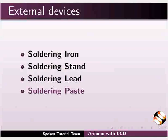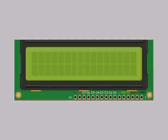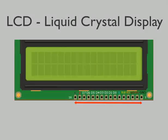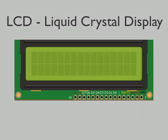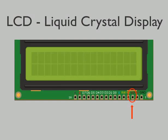Let us see the details of the circuit connection. There are 16 pins in the LCD. Pin number 1 is the ground pin represented by GND. Pin 2 is the power supply pin of 5 volts, represented by VCC. VO is the LCD contrast pin — here you have to connect a potentiometer, which will allow a variable voltage to control the contrast of the LCD.